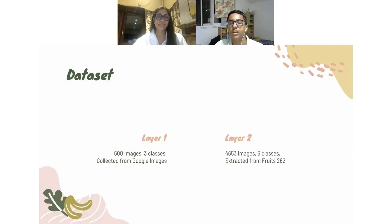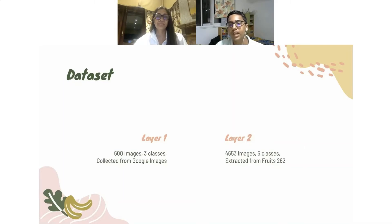For the dataset, we used two layers. Layer one was for classifying whether the food was ripe, unripe, or expired. Then we used a rule-based classification in layer two, which classified the fruit. With the rule-based algorithm, we can predict how many days until the food will expire or ripen.